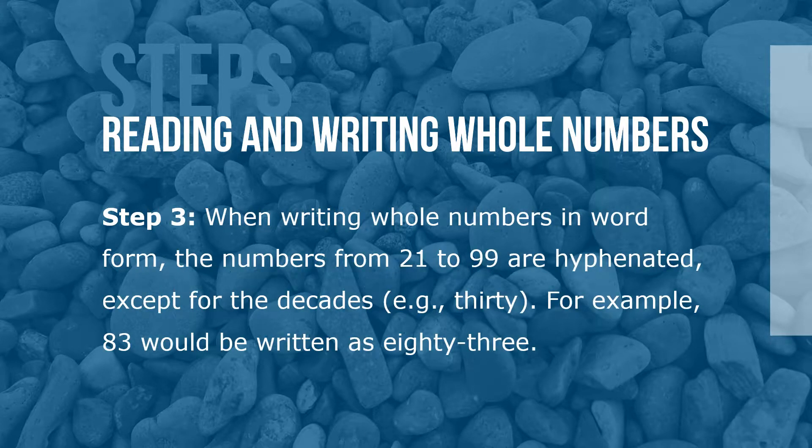Step 3: When writing whole numbers in word form, the numbers from 21 to 99 are hyphenated, except for the decades — for example, 30. For example, 83 would be written as eighty-three.